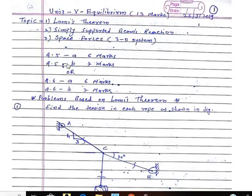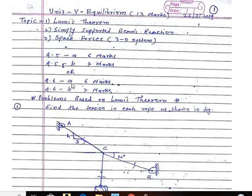According to the question paper pattern, question 5A is 6 marks, question 5B is 7 marks. Question 6A is 6 marks and question 6B is 7 marks. Questions 5B and 6B, which are 7 marks, are based on space forces. And from 5A, the 6-mark question is either Lami's theorem or beam reactions. Okay, so this is the question paper pattern.